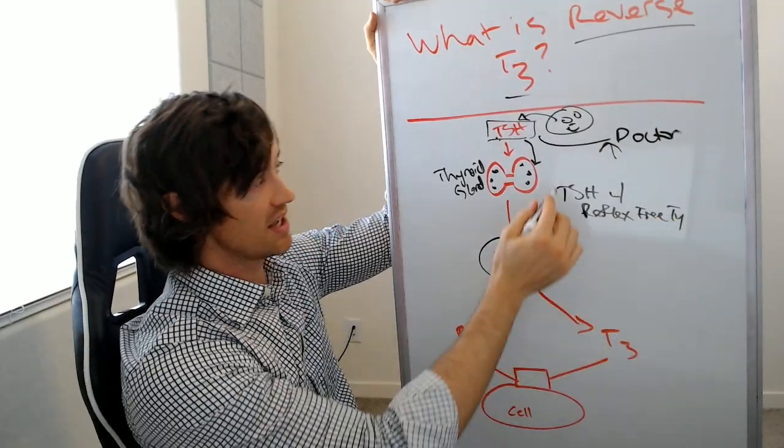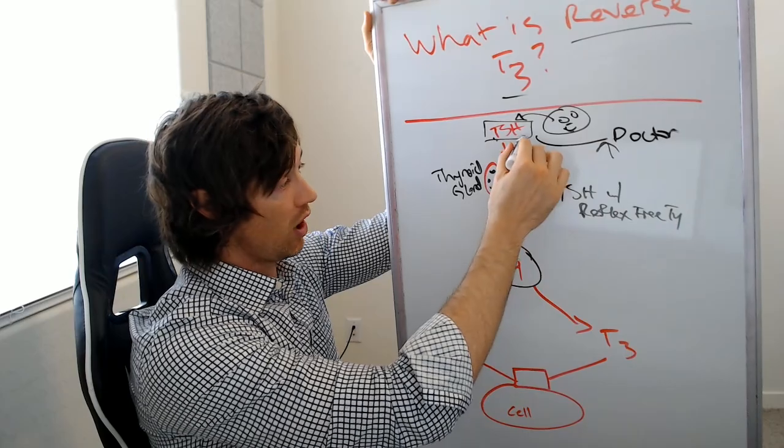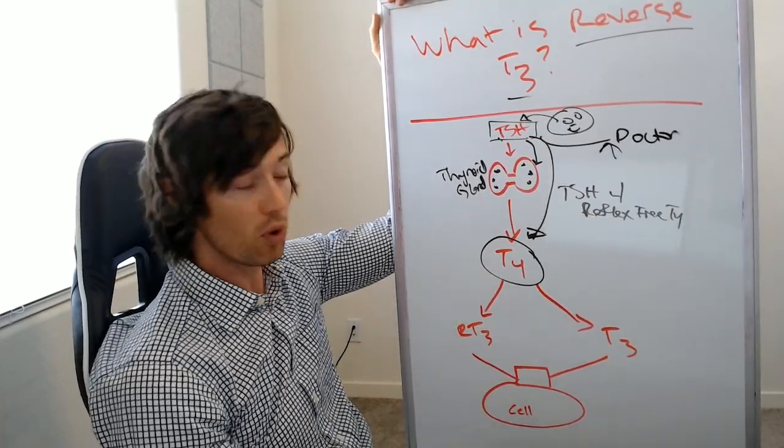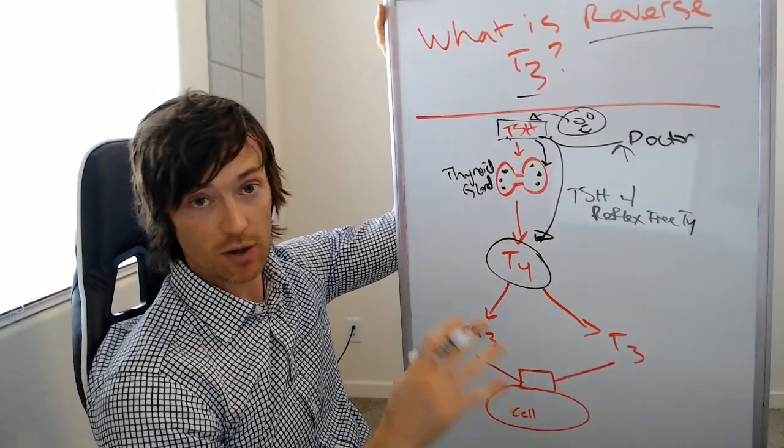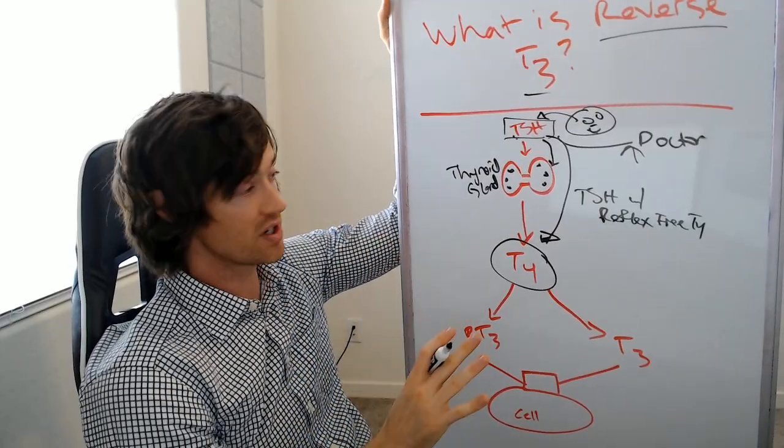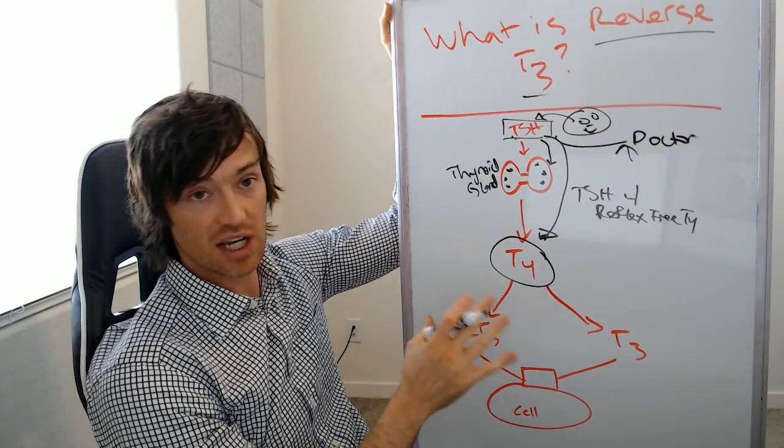So what this means is that if you check the TSH and it's abnormal, the labs will automatically check how much T4 is also in your blood. And it's important because T4 is a thyroid hormone and it helps you to understand what's happening between the relationship between TSH and T4, but this isn't even where reverse T3 gets into place or gets into play. Now we're finally in the section where it matters.